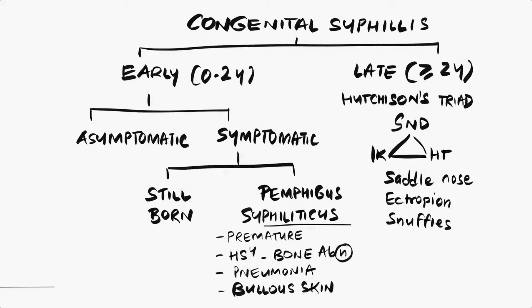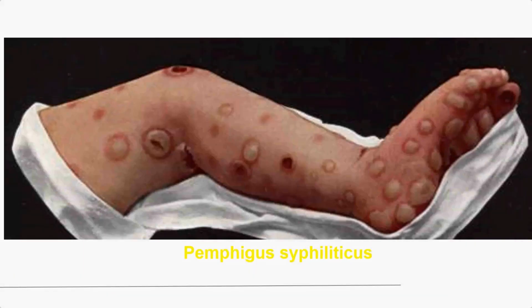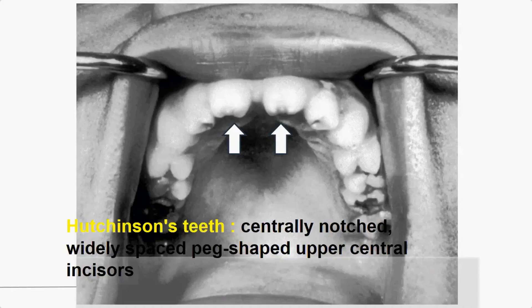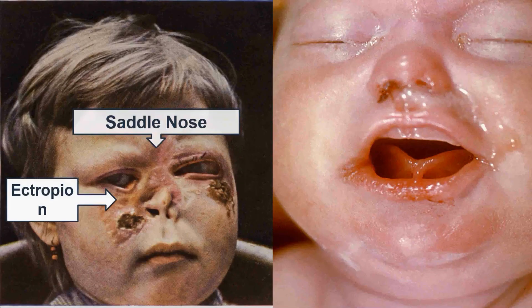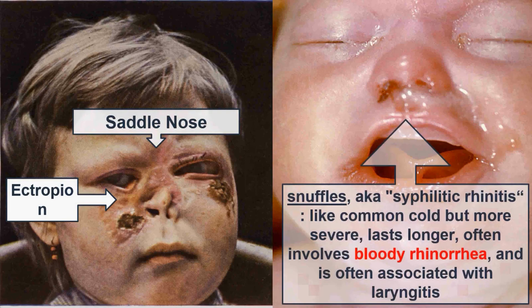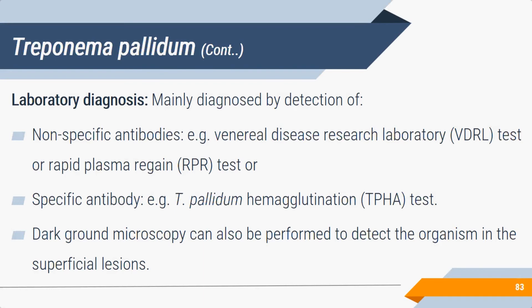T. pallidum can transmit vertically — mother to fetus — causing congenital syphilis. Early congenital syphilis (less than 2 years) may be asymptomatic or show stillbirth, pemphigus syphiliticus, bone abnormalities, bullous lesions, and pneumonia. Late congenital syphilis presents with Hutchinson's triad — sensorineural deafness, interstitial keratitis, and Hutchinson's teeth (centrally notched central incisors) — plus saddle nose, ectropion, and snuffles (syphilitic rhinitis with bloody nasal discharge).